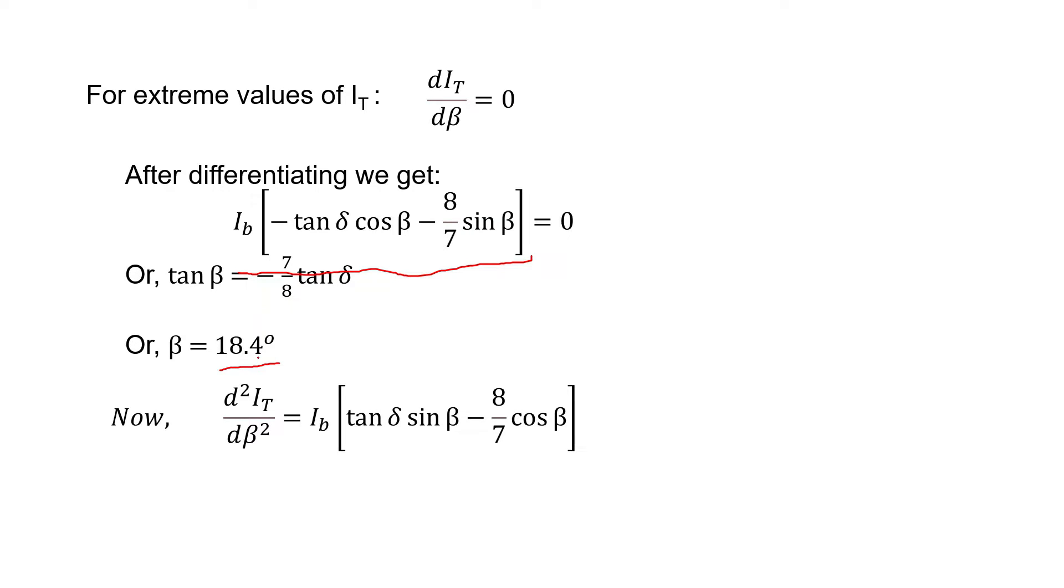Now beta equal to 18.4 degrees could correspond to either maximum or minimum value. To check whether it is maximum or minimum, we have to perform the second derivative.